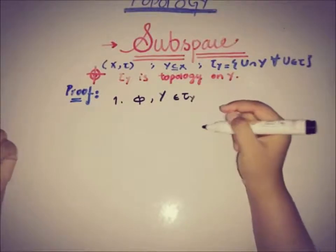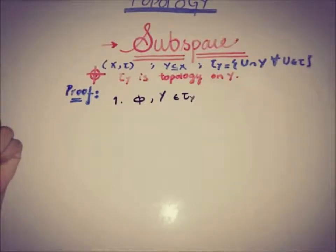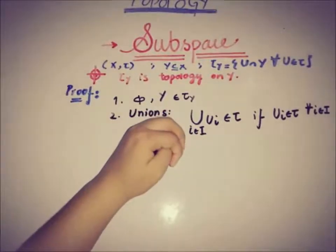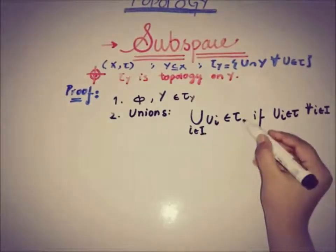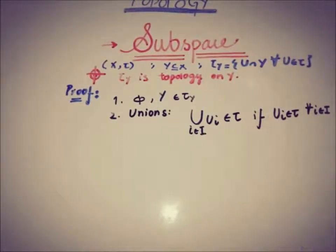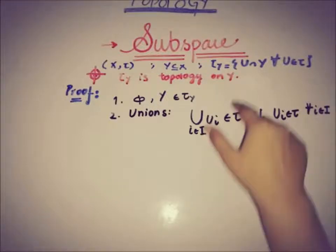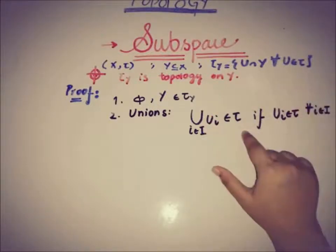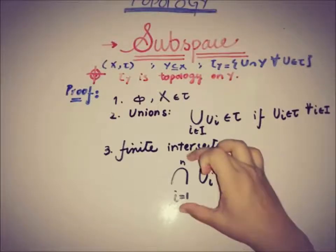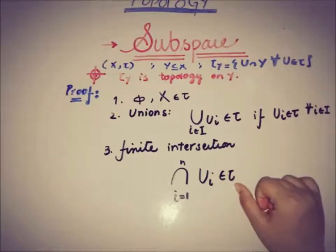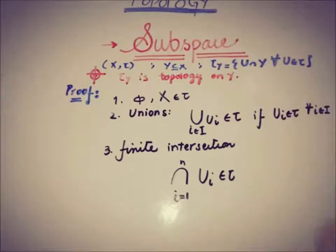The second property is about arbitrary unions — that is, arbitrary unions of open sets must be a part of the topology τ_Y. The third is about finite intersections: if we take finitely many members from the topology, their intersection must also be a part of the topology. These are the three properties that τ_Y must satisfy in order to be a topology on Y.